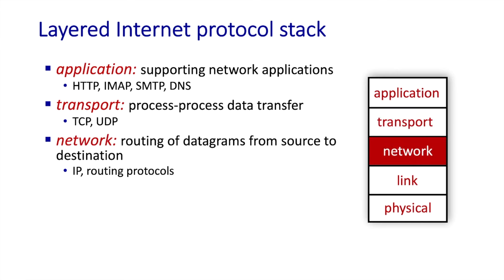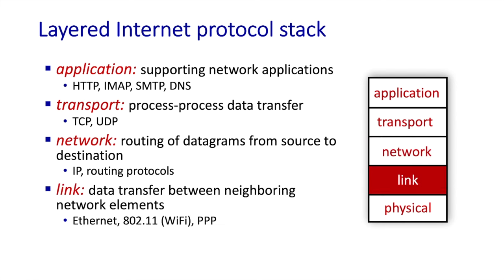The network layer transports data from one end device or host to another — reliably or not, depending on the service model. The internet's network layer does not provide reliable host-to-host transport; its service model is called best effort service, meaning: we'll do our best but make no guarantees. Note the subtle difference: host-to-host transfer is done at the network layer, while process-to-process transfer is done at the transport layer.